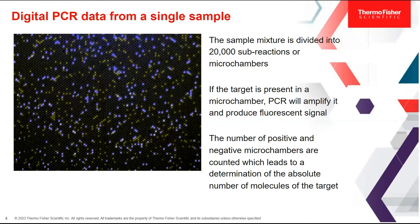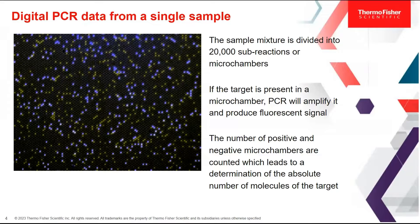Digital PCR is different — it gets us an absolute quantity. What you're seeing here is raw data from digital PCR. Each of these little dots represents a different sub-reaction from the same sample mixture. This whole block in front of you is from a single sample; it was divided out into 20,000 sub-reactions or microchambers. Every time the target molecule is present, that microchamber will light up. If it's not present, it'll be dark. So we count up the number of positives and negatives in order to get to that absolute copy number of the target molecule or molecules.